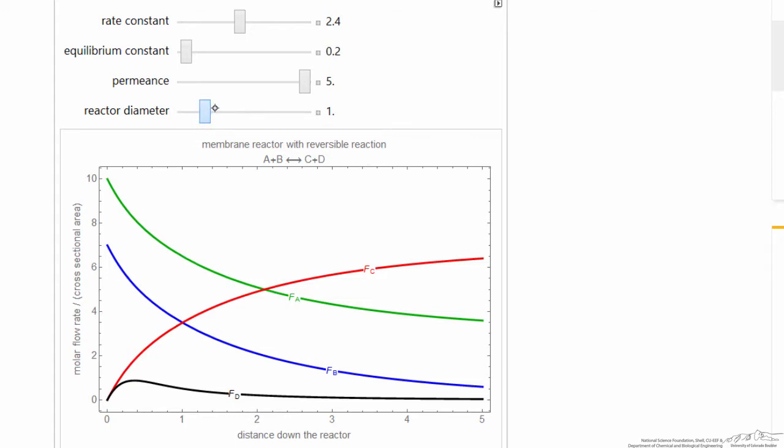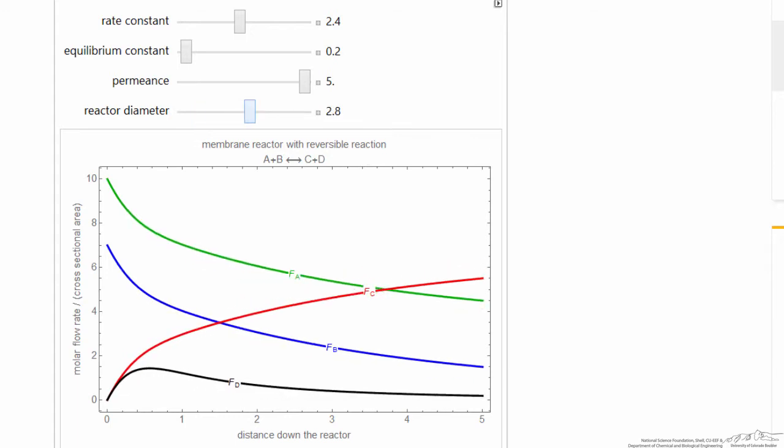If I increase the diameter of the reactor, then I'm changing the permeance area, that ratio of area for permeance over reactor volume goes down, so I'm not going to be able to as effectively remove product D.